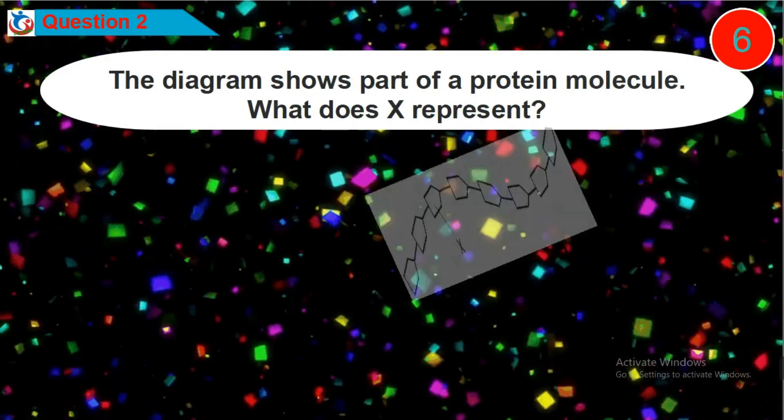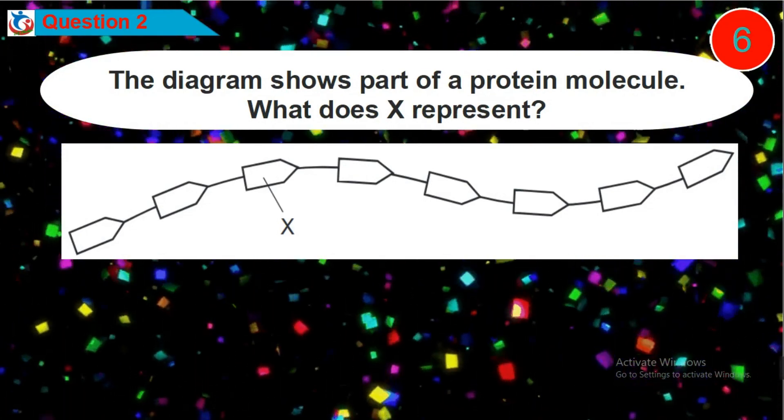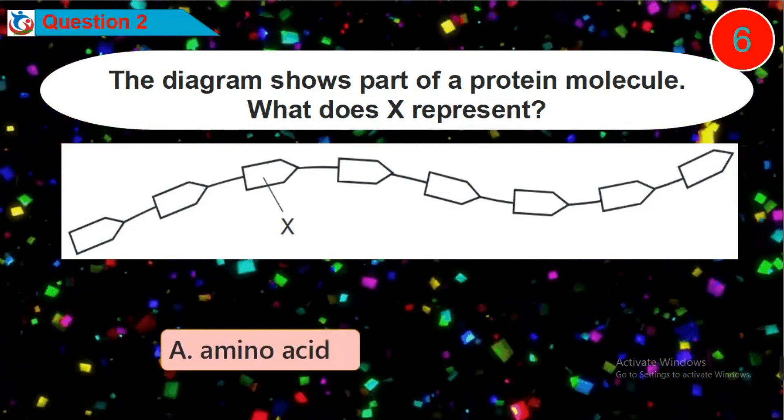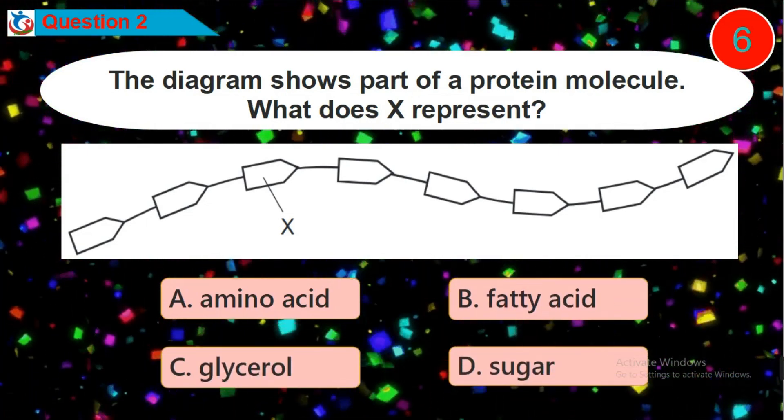Question 2. The diagram shows part of a protein molecule. What does X represent? Is it option A, B, C or D?